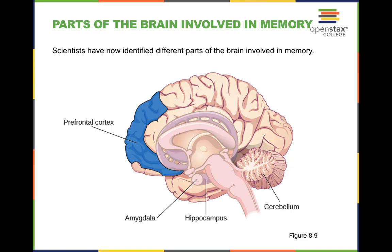Let's talk about parts of the brain involved in memory. When it comes to the prefrontal cortex, anything involved in higher-order functioning such as memory, the prefrontal cortex is going to be involved. It's also involved in emotional processing accompanied with the amygdala to help us with classically conditioned associations with memory — things that are more unconscious.